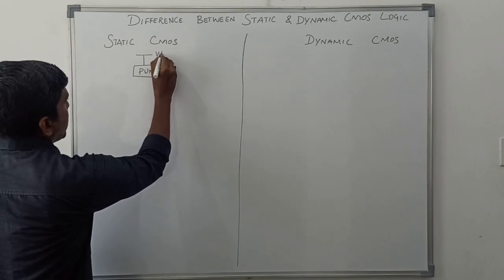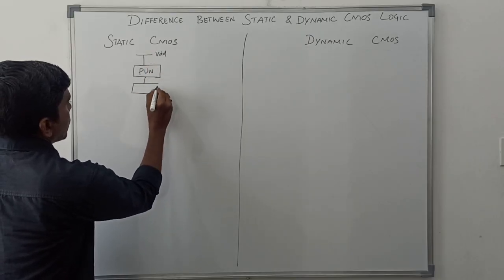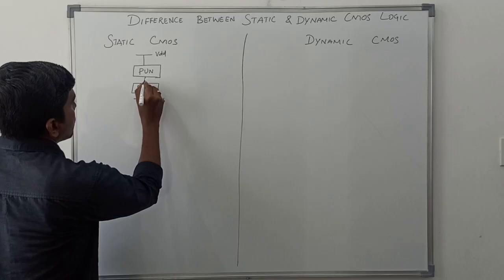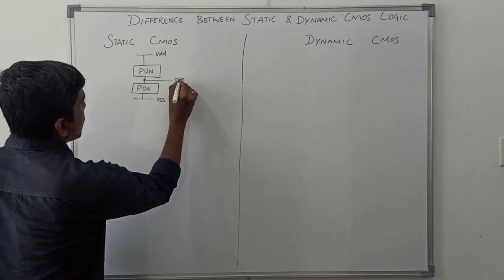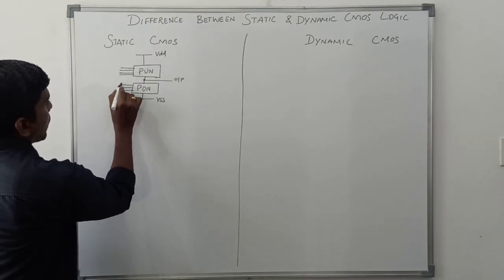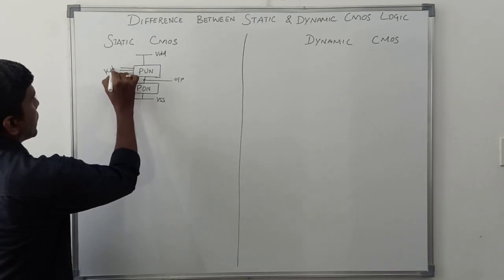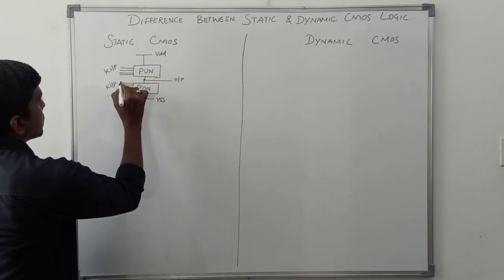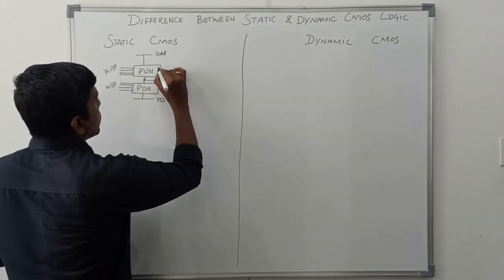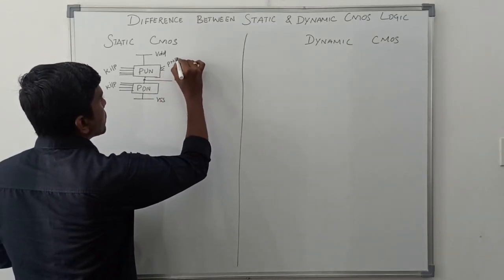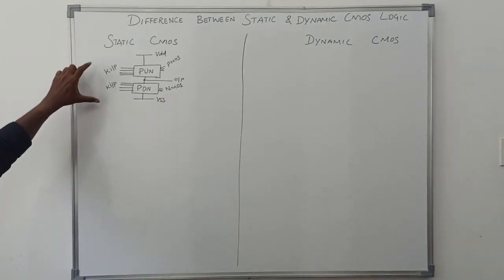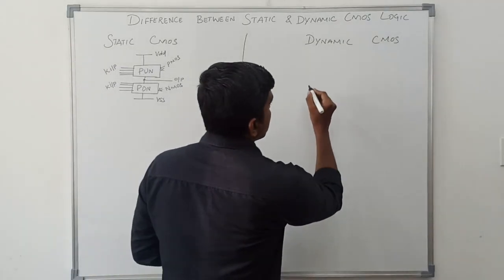The basic structure of static CMOS: the pull-up network is connected to VDD and the pull-down network is connected to VSS, and the output is taken from here. Logical inputs are connected to both the pull-up network and pull-down network. The pull-up network consists of PMOS transistors and the pull-down network consists of NMOS transistors.